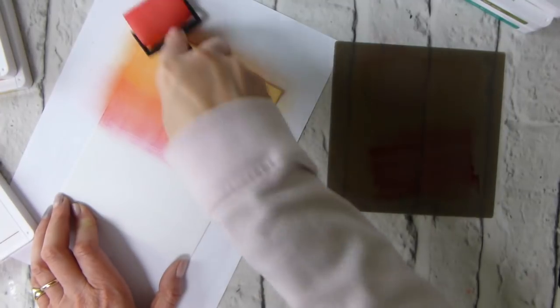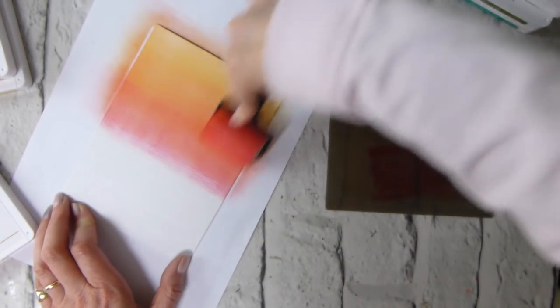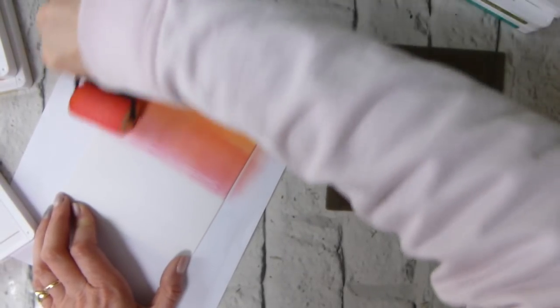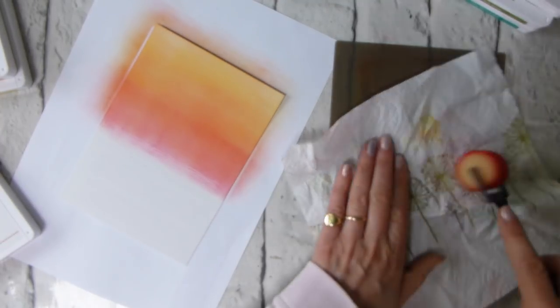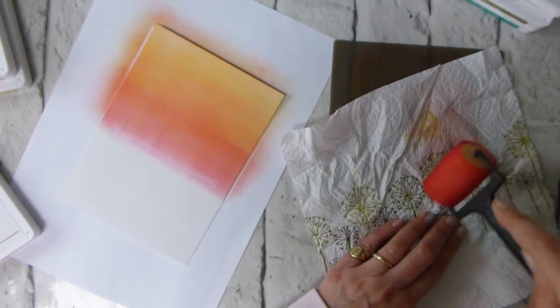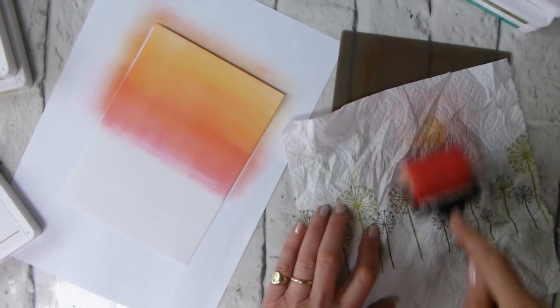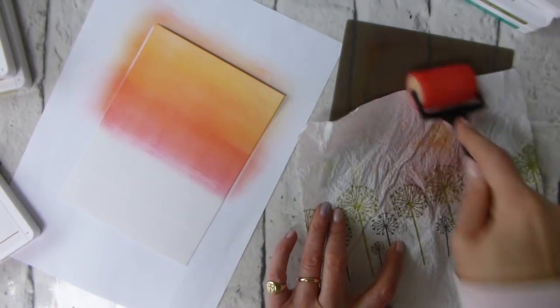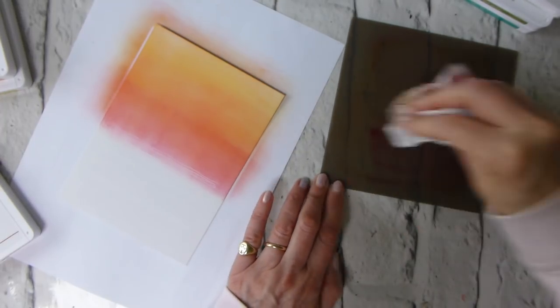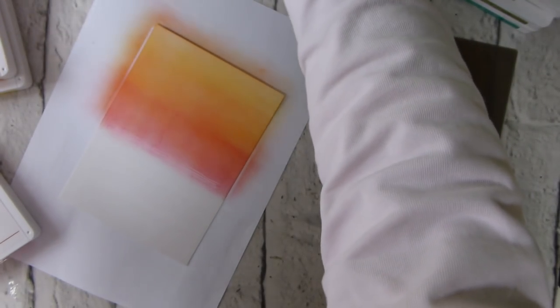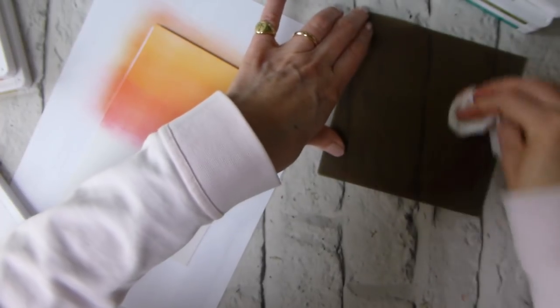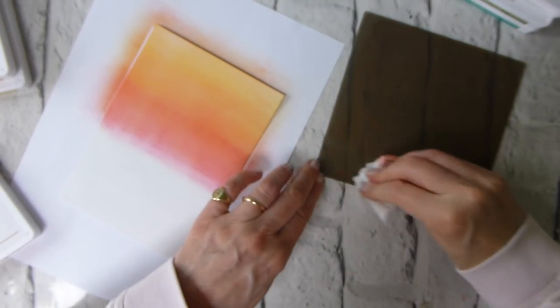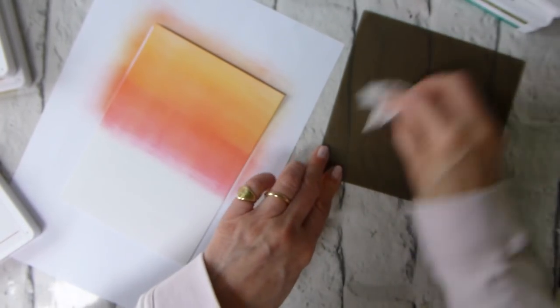And then pick up some more of our softer colors. The key is to keep going over and over, and you can see already where the stamping is. It is doing that ghosting resist. And if I come in with my paper towel, I can polish that a bit, which helps smooth some of the ink out.